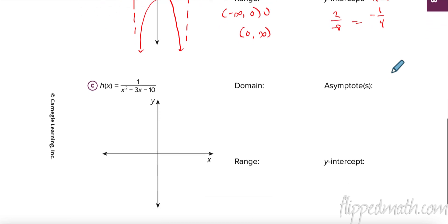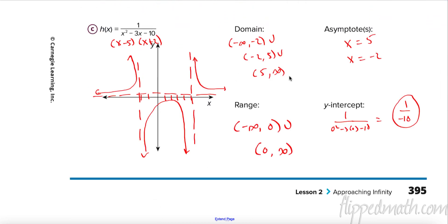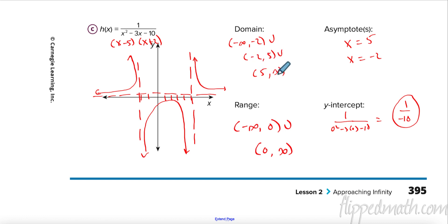Pause the video and try this one on your own. Two numbers that multiplied to negative ten and added to negative three are negative five and two. So X equals negative two is one vertical asymptote and X equals five is the other. My horizontal asymptote did not change. Domain runs from negative infinity to negative two, from negative two to five, and from five to infinity. Range is the same. For the y-intercept, plug in zero — these cancel and I get one over negative ten.